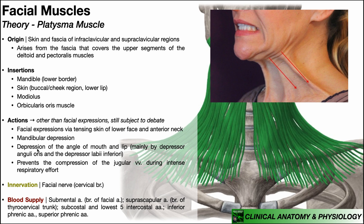The platysma also depresses the angle of the mouth and the lip, though it is not the prime mover — that role belongs to the depressor anguli oris and the depressor labii inferioris. Here's a function not normally discussed: the platysma will prevent compression of the jugular veins during intense respiratory effort or intense exercise. You can actually see the platysma flare outward in people heavily exerting themselves. This is thought to open up the anterior neck and relieve potential compression of the jugular veins, which are very superficial and could otherwise be compressed by contraction of muscles in the neck and upper thorax.